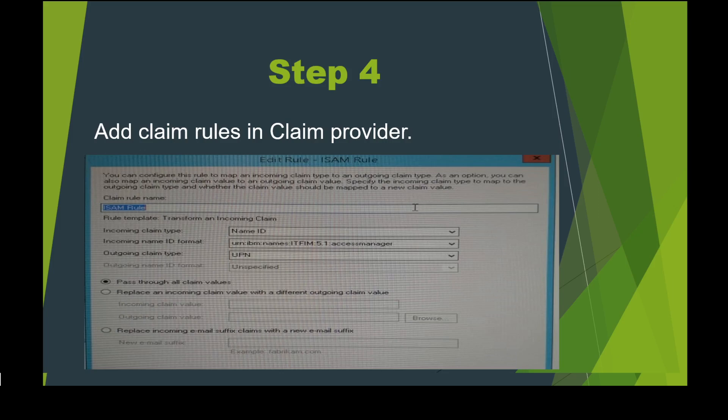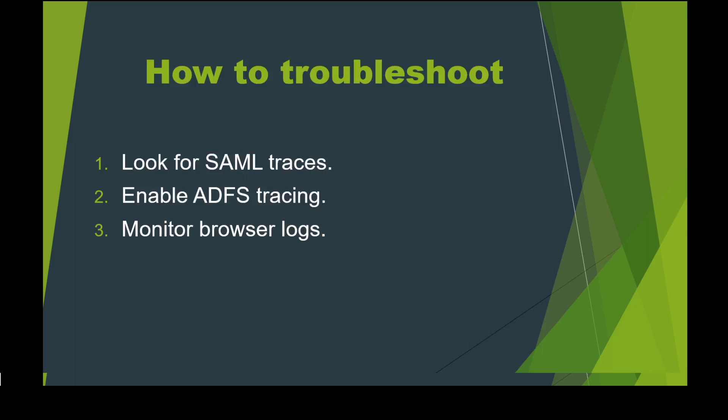While doing all this, I encountered many errors, so here are some troubleshooting methods. First, look at the sample traces — they show what claim types are coming, the namespace, and the format, which is how I identified the IBM Name ID format. Second, you can enable ADFS tracing in Event Viewer on the server where ADFS is set up, compare logs, and check details. Third, you can also monitor the browser logs.